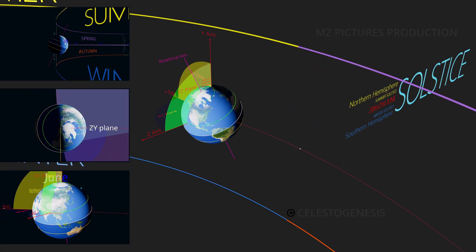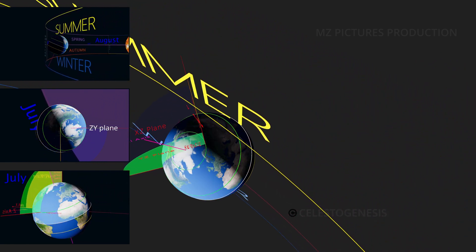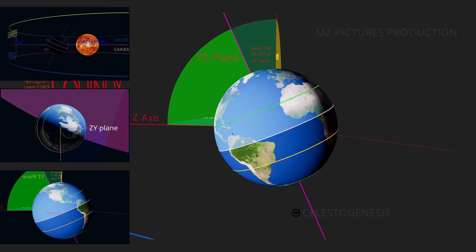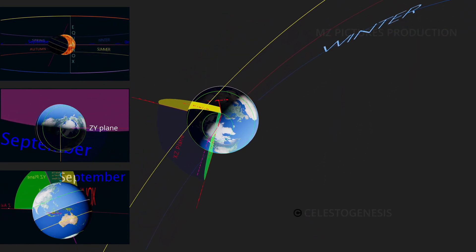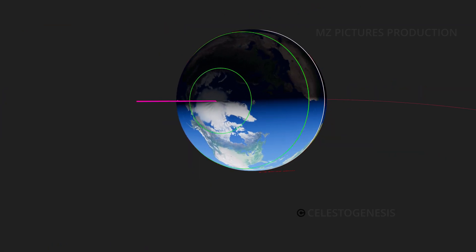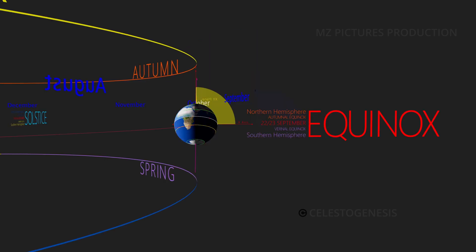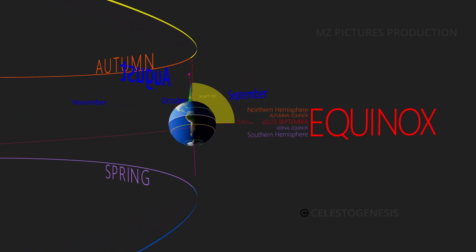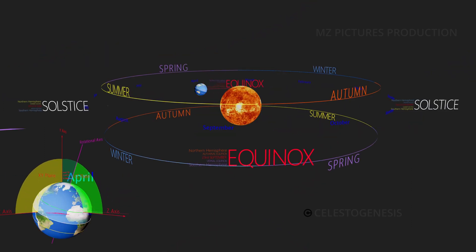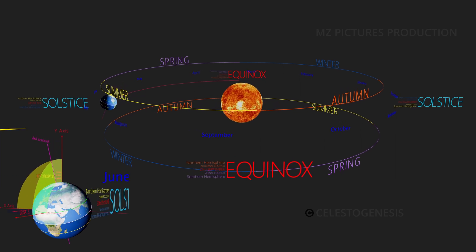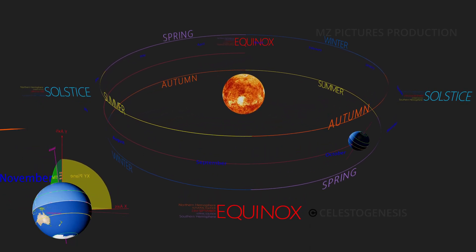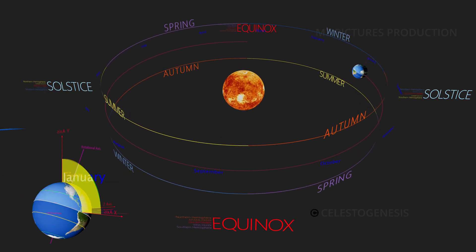Moving through July and August, the y-z plane gradually becomes perpendicular to the sun rays again, and the subsolar point starts moving back toward the equator. By around September 23rd, the y-z plane is again perpendicular to sun rays and the subsolar point passes through the equator, marking the second equinox of the year with equal day and night throughout Earth. This is the autumnal equinox in the northern hemisphere and the vernal equinox in the southern hemisphere, as the southern hemisphere will begin receiving more sunlight as the subsolar point moves toward the Tropic of Capricorn.